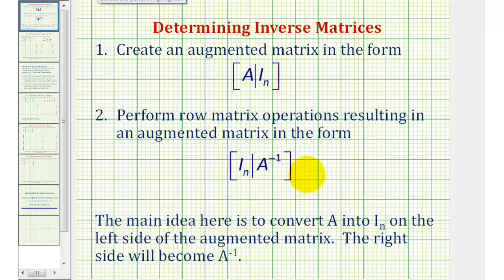So the main idea is to set up the augmented matrix where matrix A is on the left side, perform row operations to form the identity matrix from matrix A, and the right side will be A inverse, or the inverse of the original matrix.